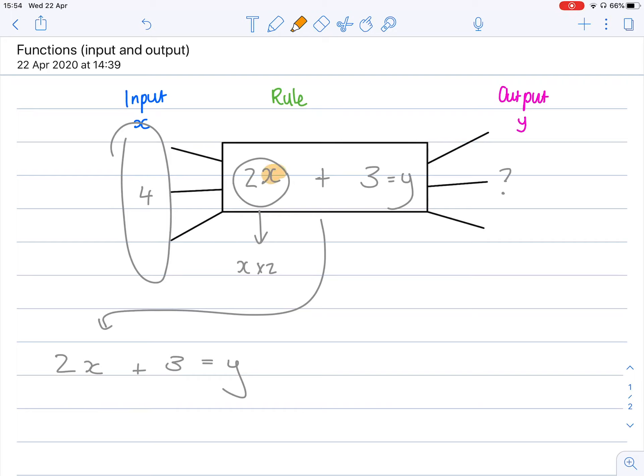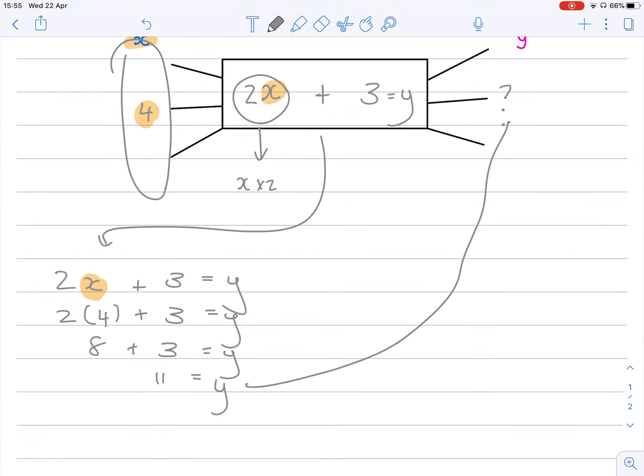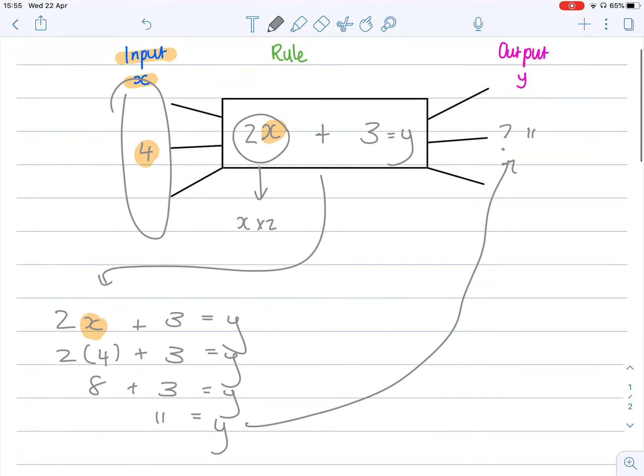Where there's an x, you replace it with its input, because that's why we call it the input value. So two bracket four, or you could have said two times four plus three equals y. And then according to BODMAS, I have to do brackets first. So two times four is eight plus three equals y. Therefore, 11 equals y. Your y value is your output value. So that's where it comes from.